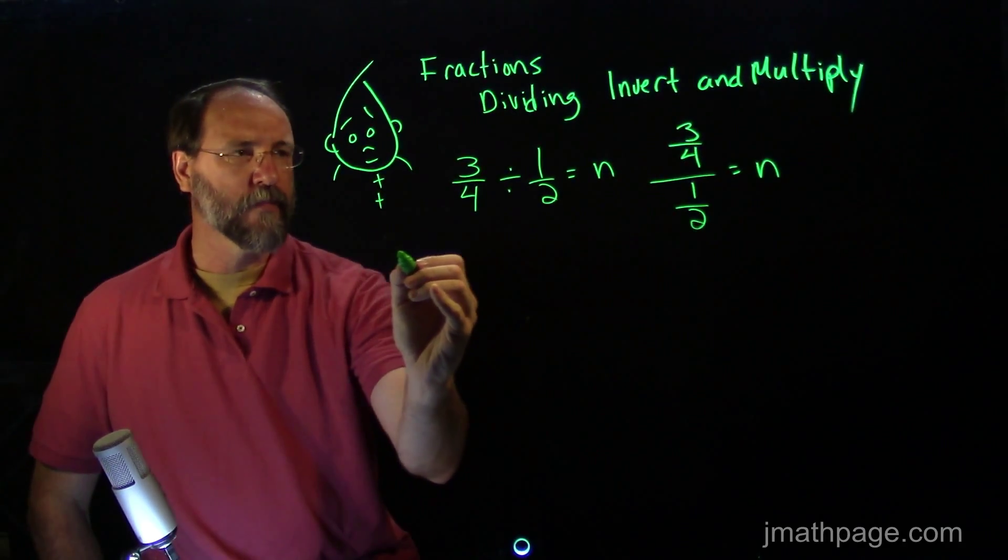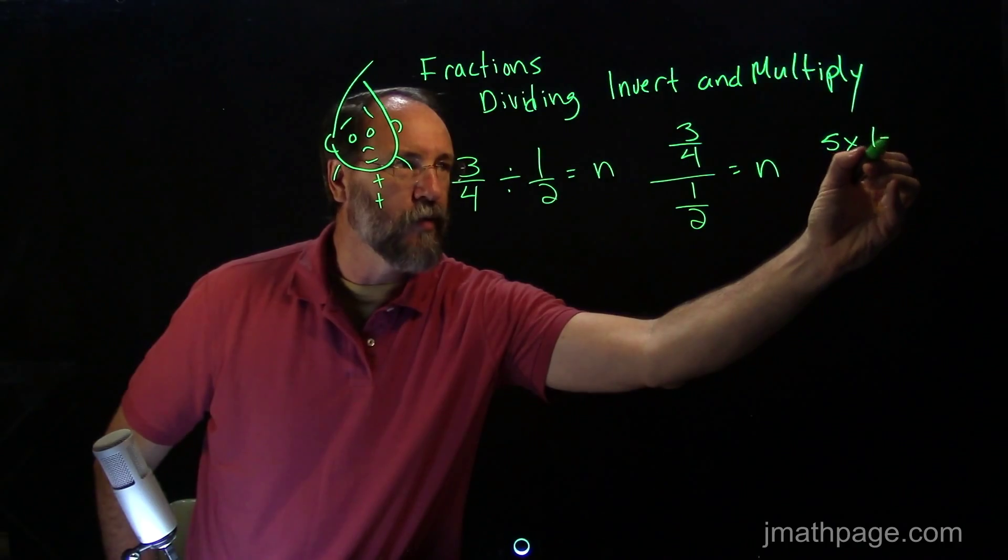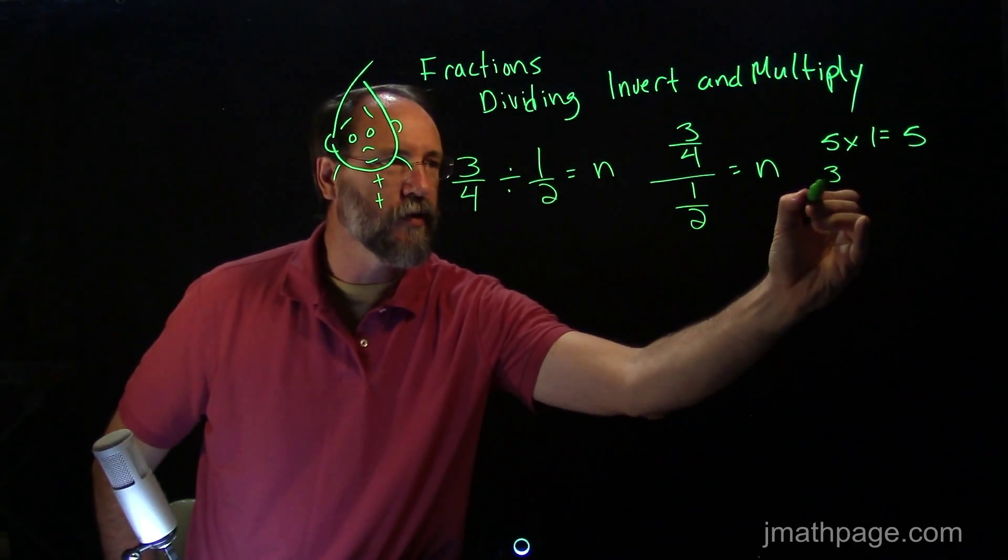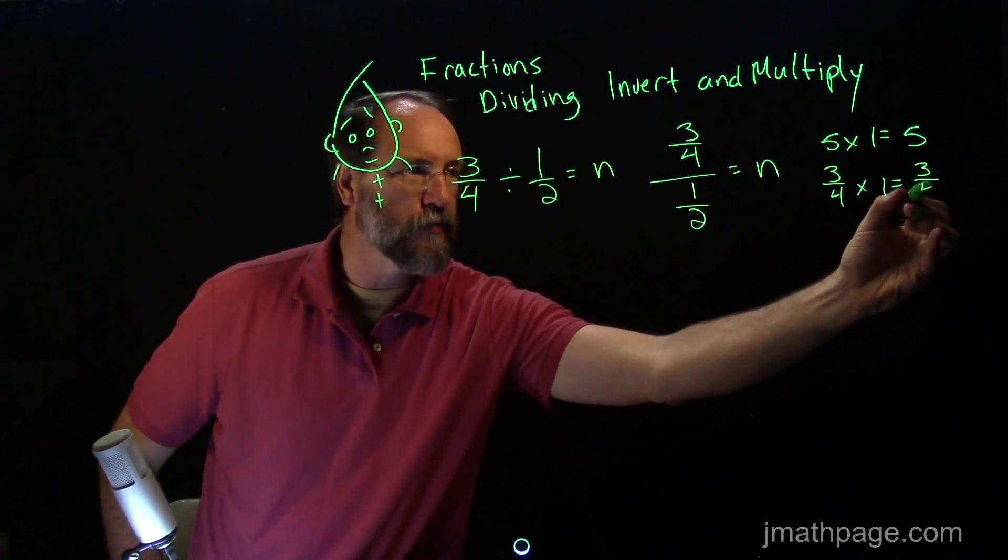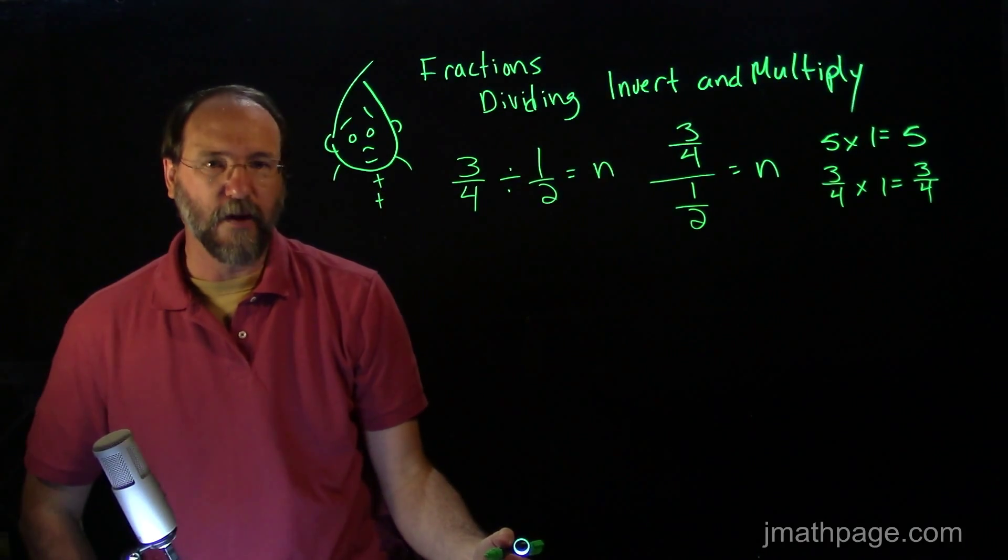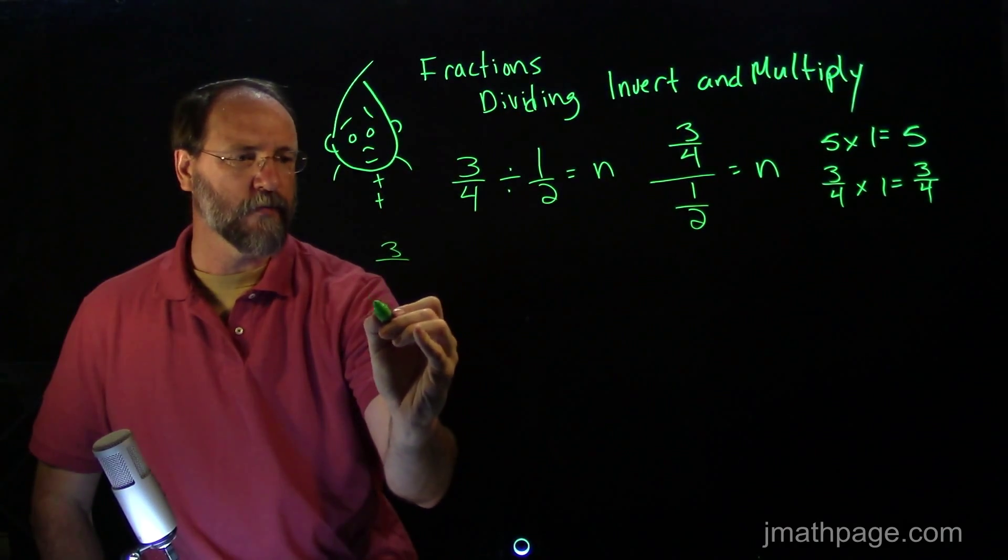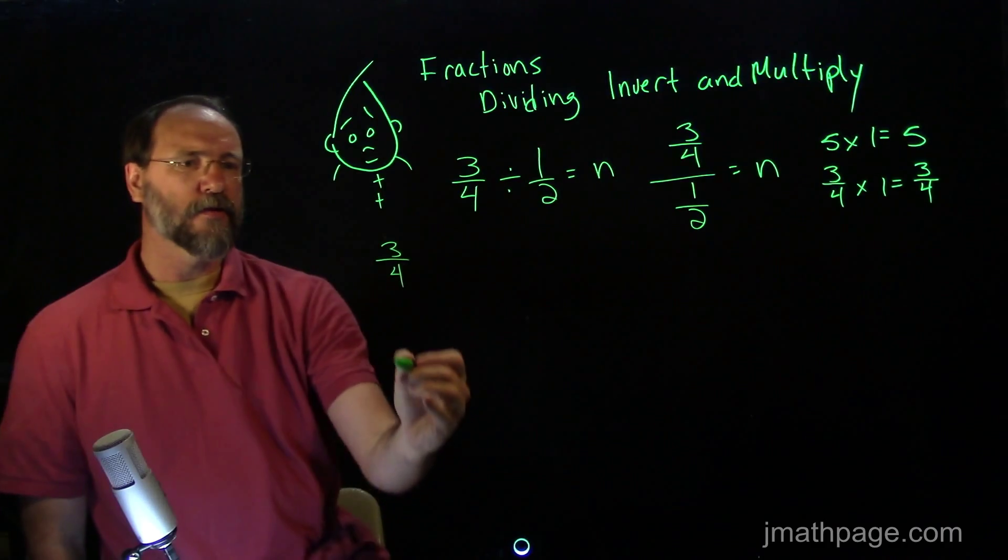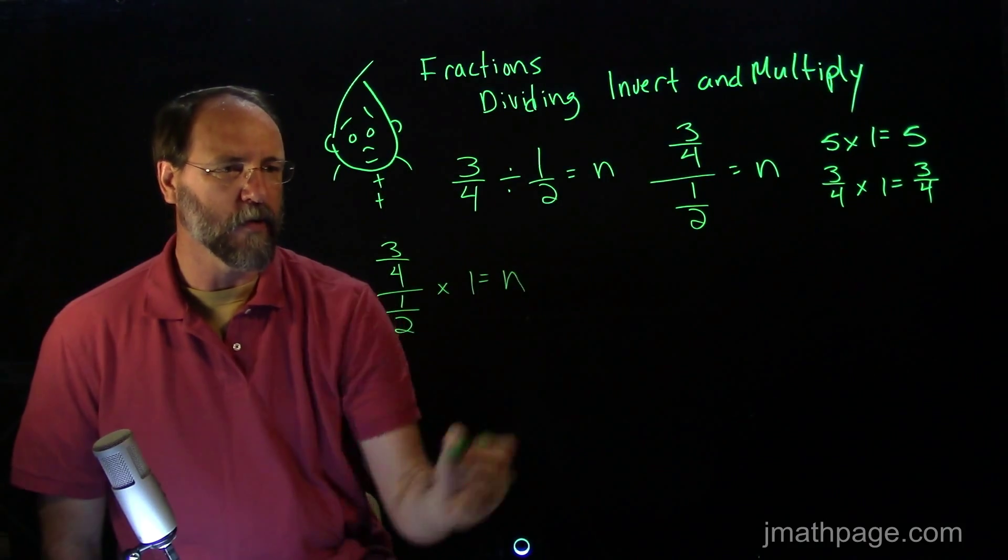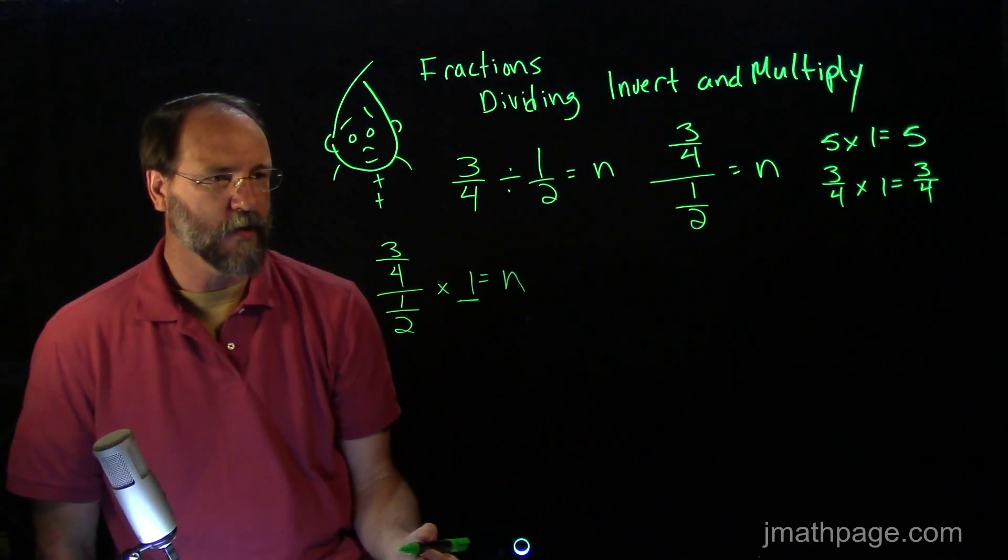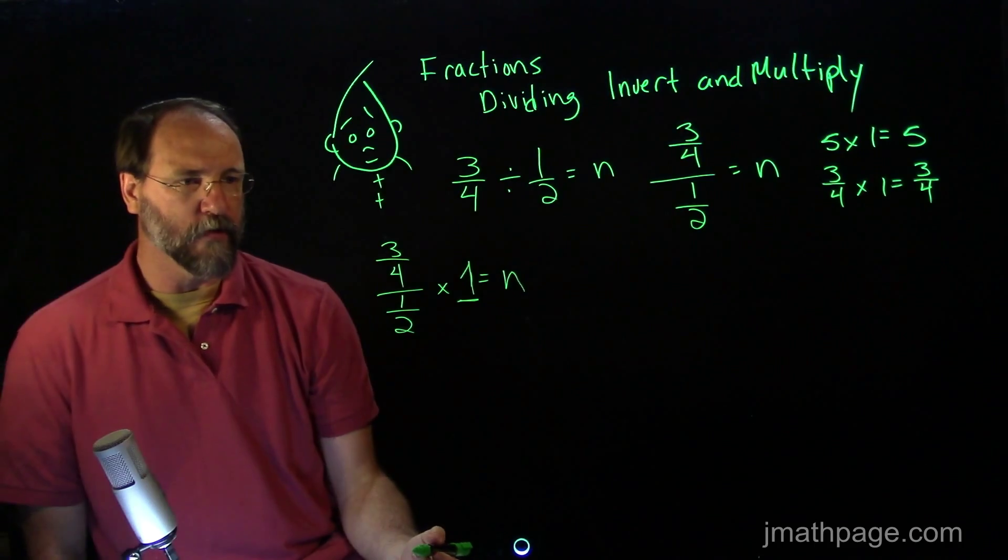Now, something else we know is that whenever we multiply a number by 1, say we have 5 times 1, it will equal itself. We also know that this happens with fractions too. So 3 fourths times 1 will give us 3 fourths. Everything's really good. Now we're going to need a 1 for this one. So this is the tricky part. What I want to do is I want to take 3 fourths over 1 half and I want to multiply it by 1 to give us the number we need. But I want to play with this right here. This 1 is going to be very important for us as we think about inverting and multiplying.